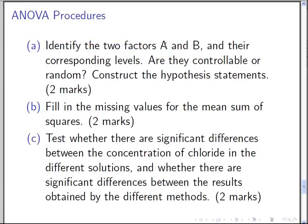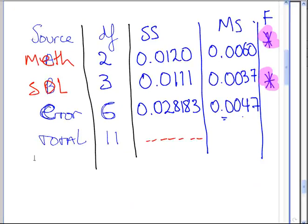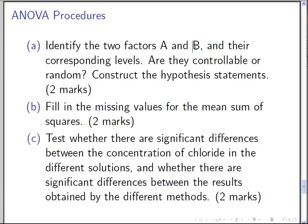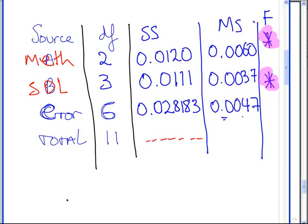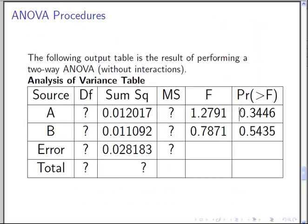Reading the questions: identify the two factors — A was method and B was solution. Method is controllable; you can choose which method to use. Any differences between solutions should be random errors. Looking at the p-values, they are not significant, so there is no significant effect for method A and no significant difference among solutions.